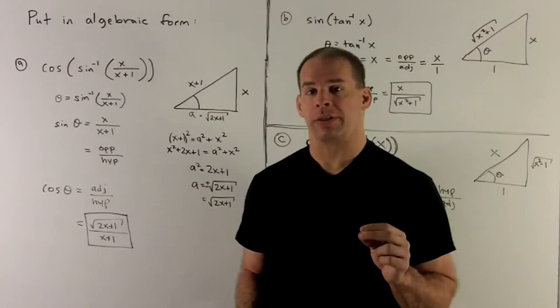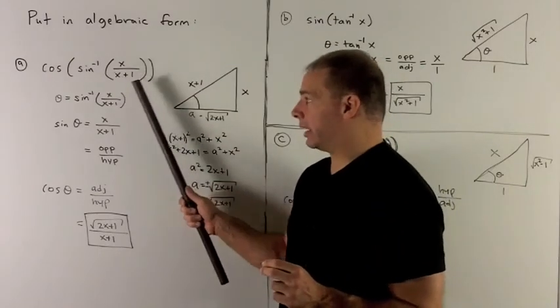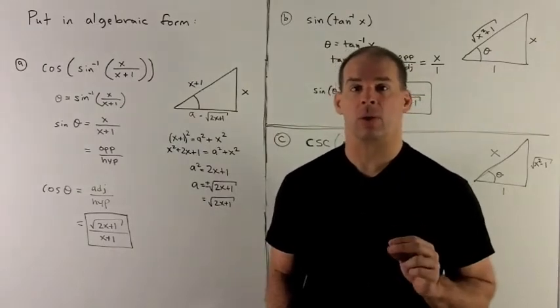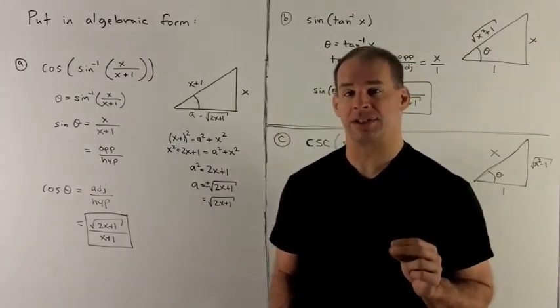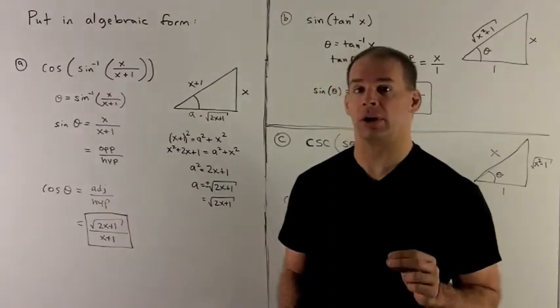I'm only going to work with the first quadrant. Because I'm not told anything about the domain of x, we're not going to worry about moving it around the other quadrants. We're just going to simplify this to an expression in x assuming we're in the first quadrant.